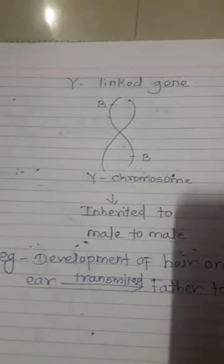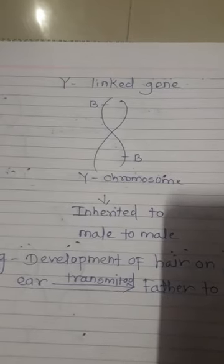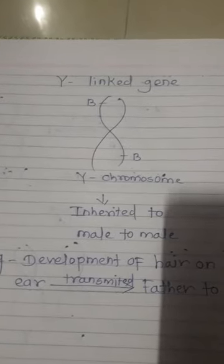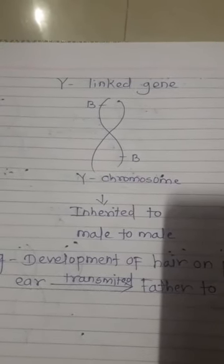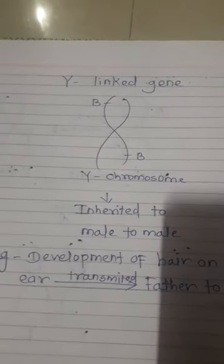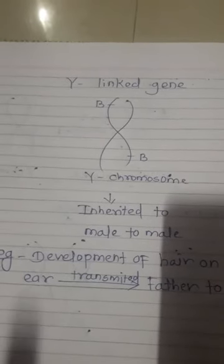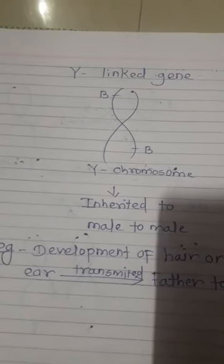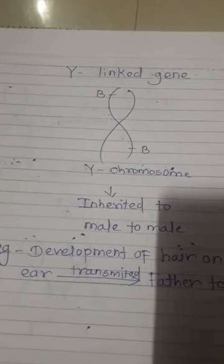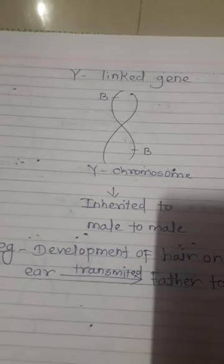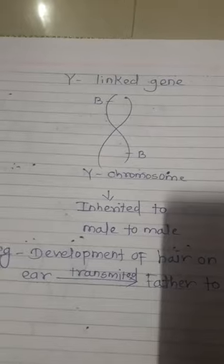Therefore, sex-linked X-linked traits appear more frequently in males than in females, because females have two X chromosomes. Examples of X-linked traits include hemophilia, color blindness, night blindness, myopia, and muscular dystrophy.